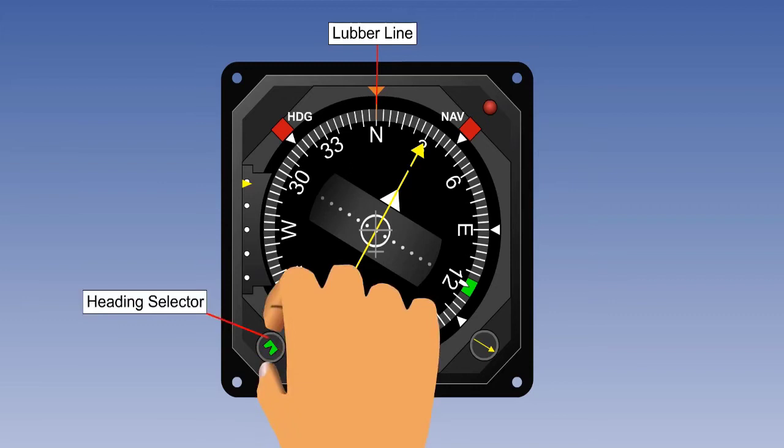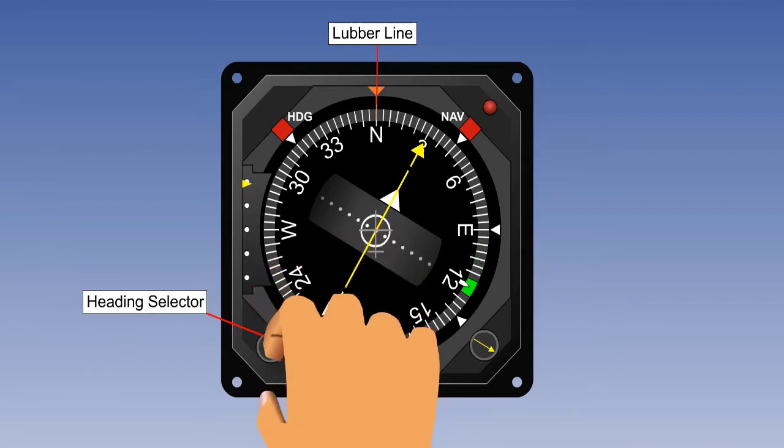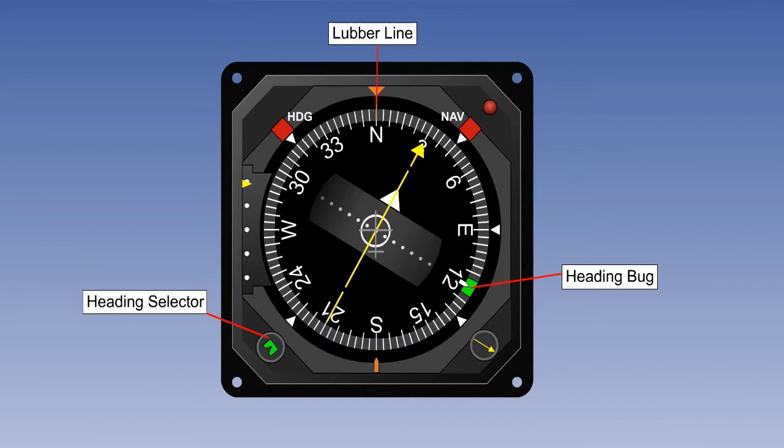A desired heading can be selected by the pilot by rotating the heading selector control. The heading select marker, usually called a bug, indicates the selected heading.